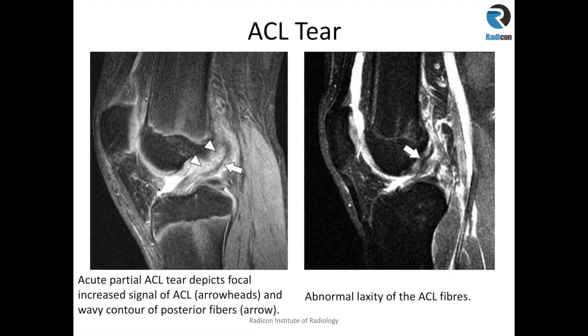Here is an example of an ACL tear — specifically what a partial thickness tear looks like. You can see the ACL is thickened, there are intrasubstance signal changes, and there is surrounding soft tissue reaction posteriorly. So this is a case of a partial thickness tear of the ACL.